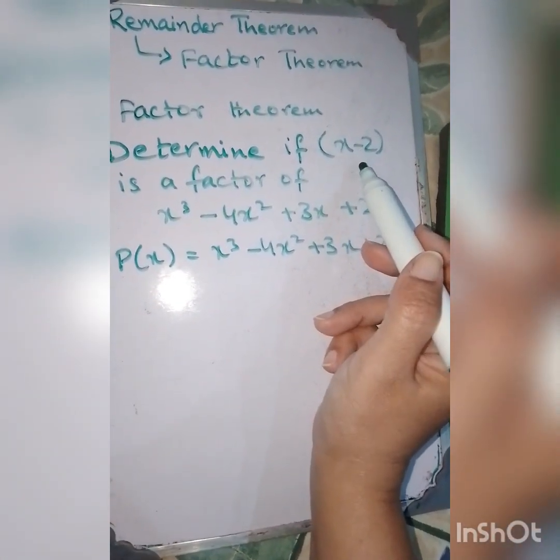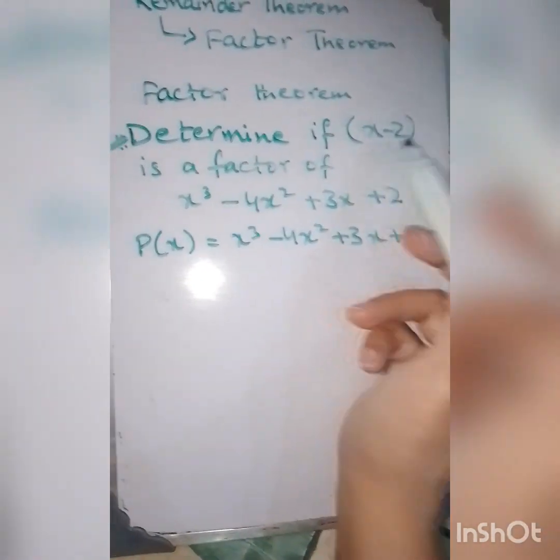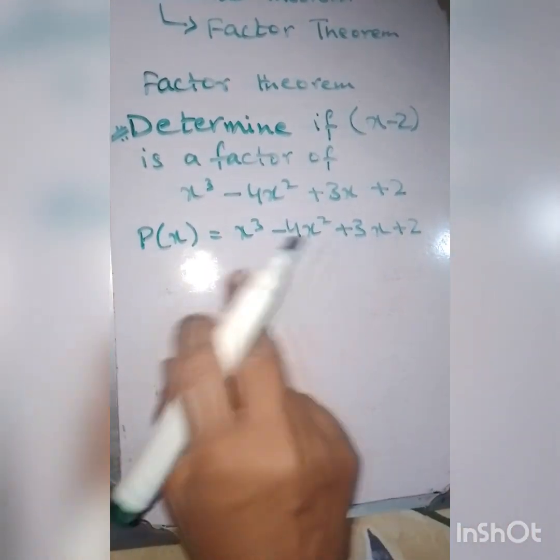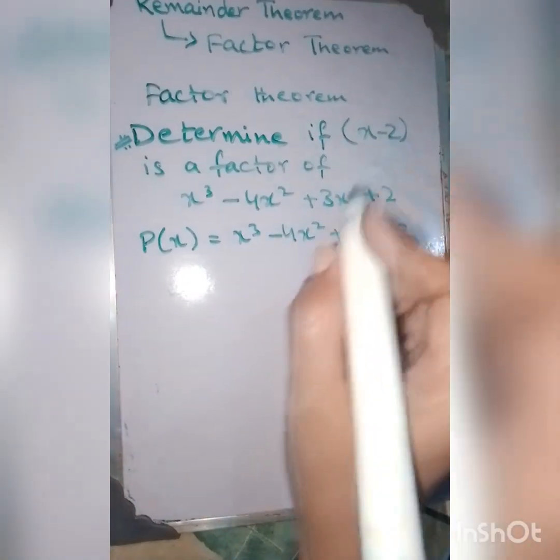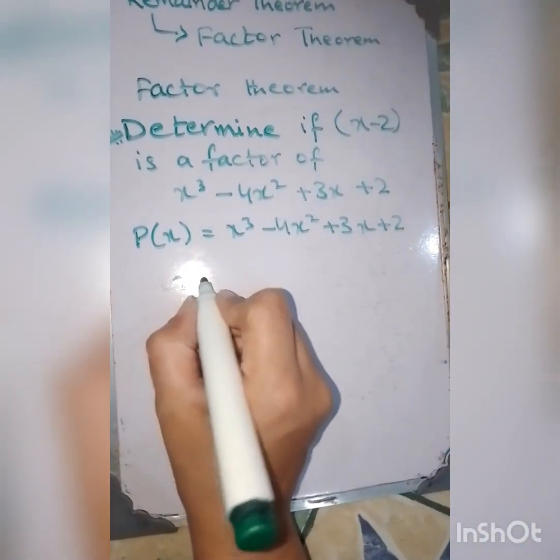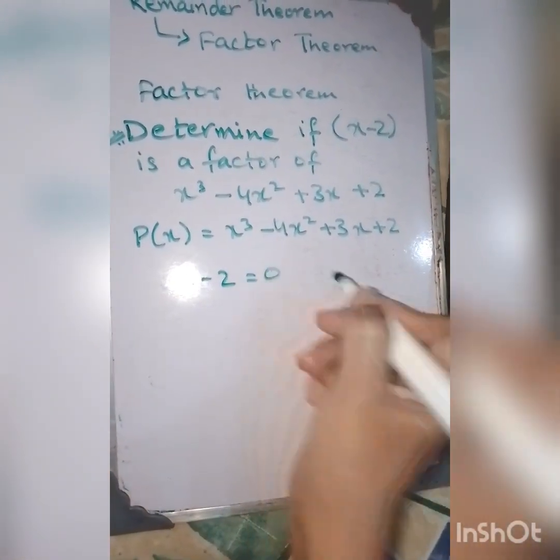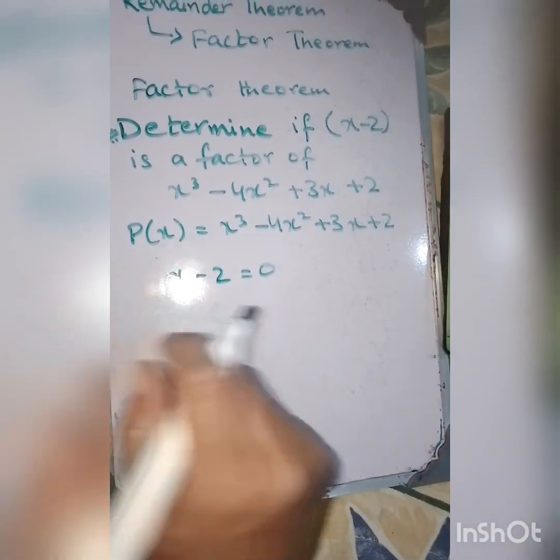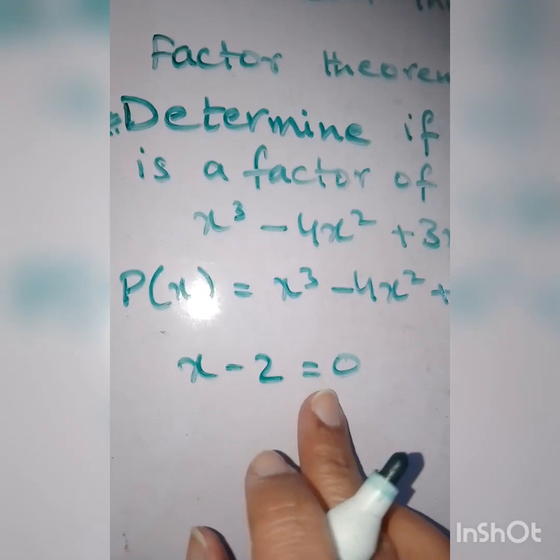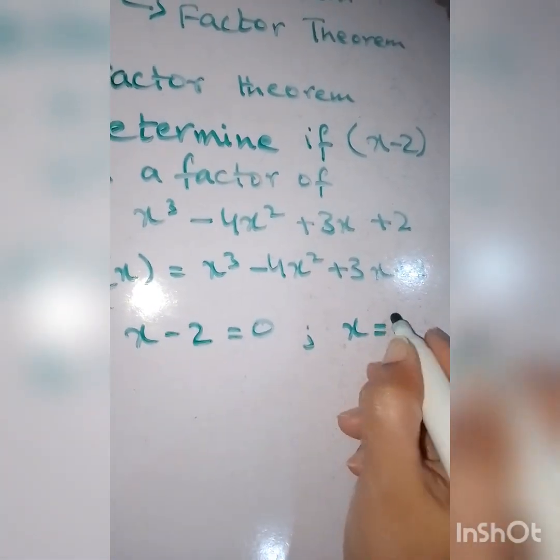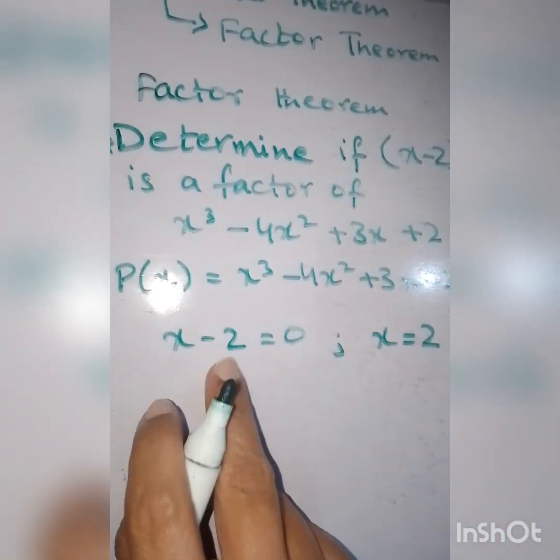For our convenience, we are going to let P(x) equal this polynomial. Then the remainder for (x-2): we are going to put it equal to zero. We are equating it as zero. After equating it with zero, we will get x equals 2.